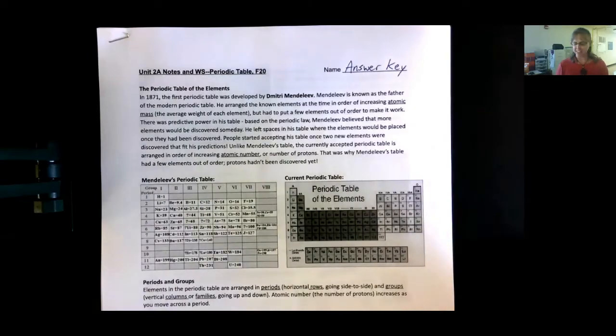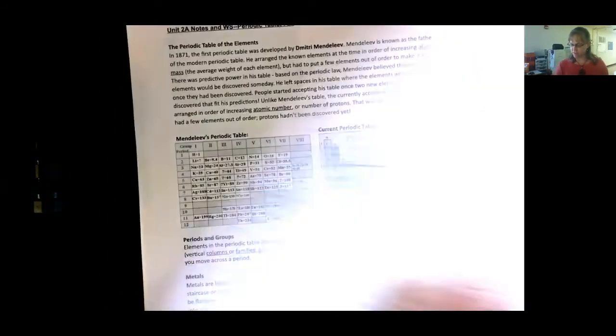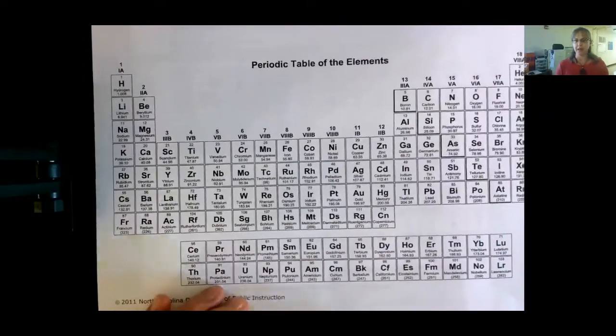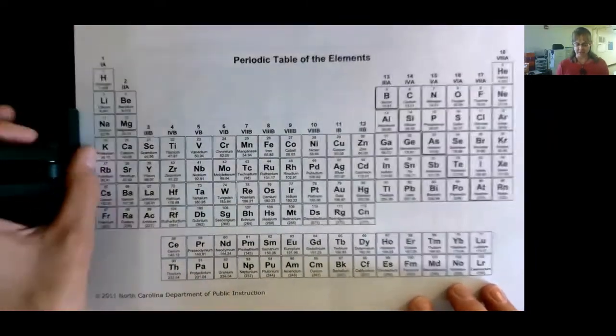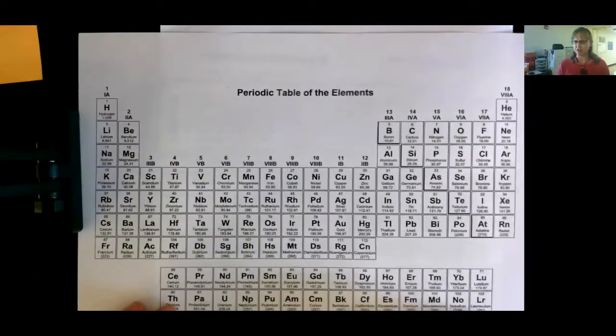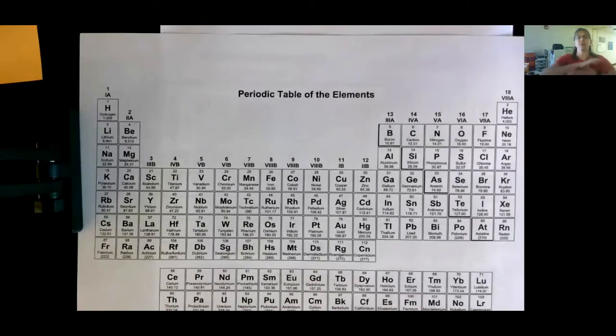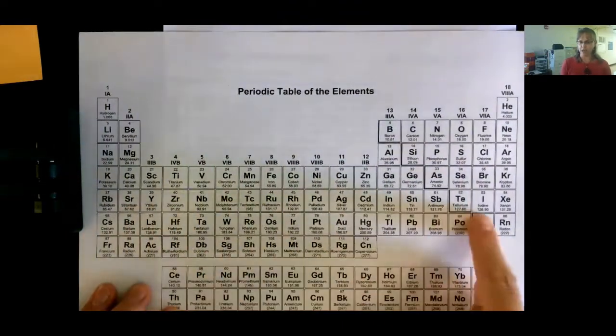The second and third questions ask about periods and groups. A period on the periodic table is a row. Think about if you're hoeing a row of vegetables - it's a really long row. Which way is longer? Side to side. So these are rows.